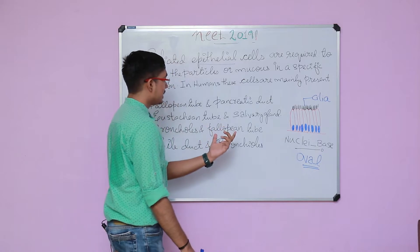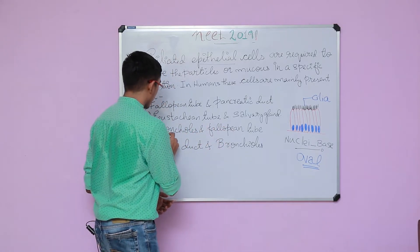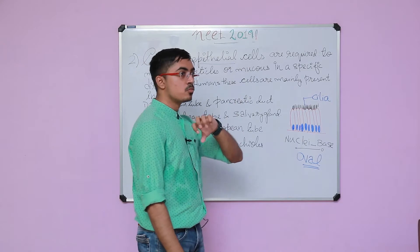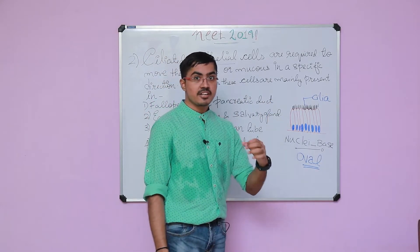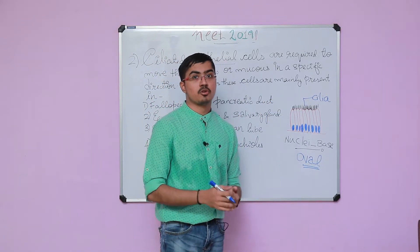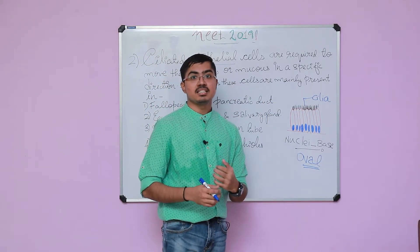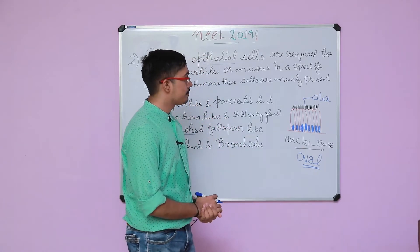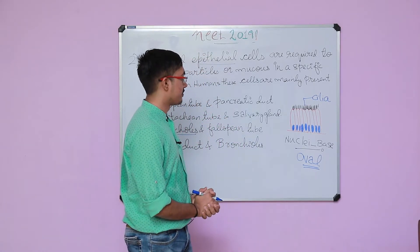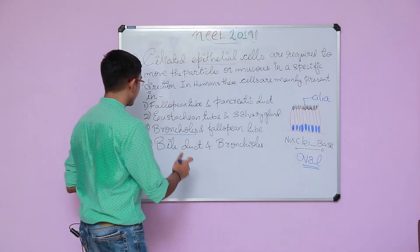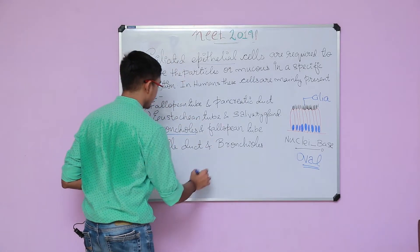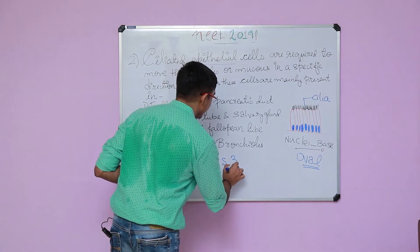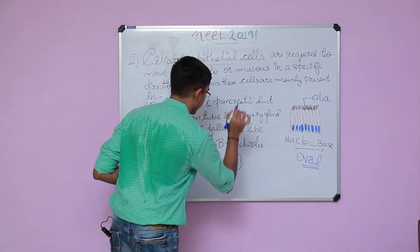Other than that, ciliated columnar epithelial cells are also present in the bronchioles, because mucus has to be moved away from there. If it accumulates it can cause cough and many other problems. So for this question, option 3 is the correct choice.